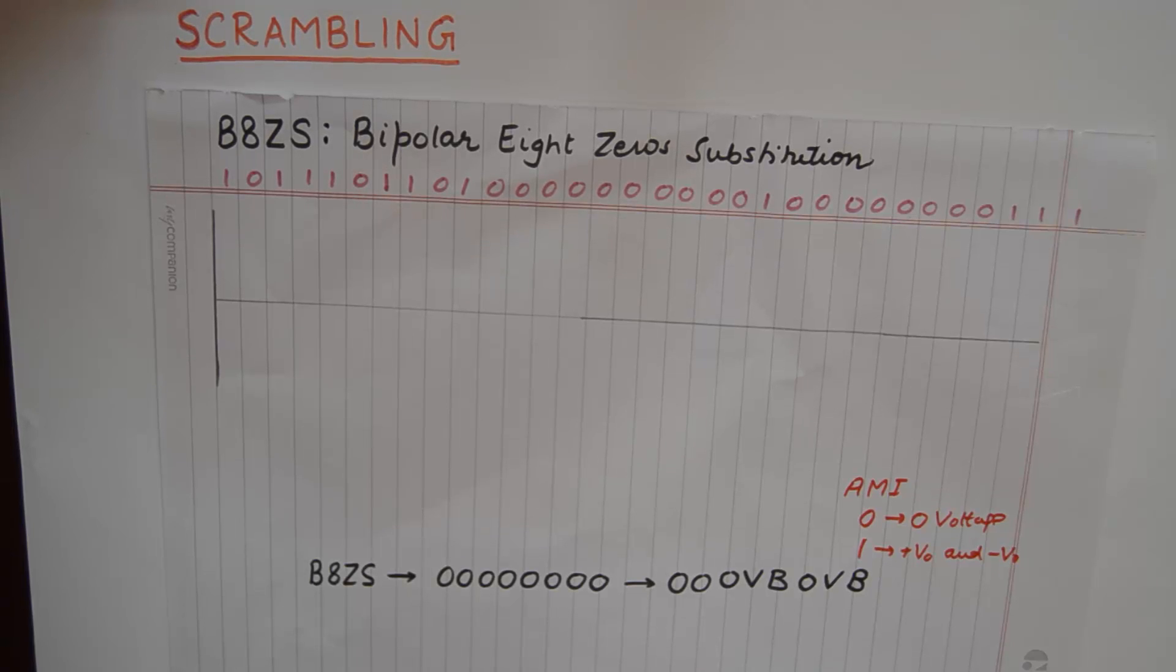These are loosely known as scrambling techniques also because they help in timing extraction at the receiver. The main objective of using these line code techniques is to eliminate consecutive zeros happening in the code.